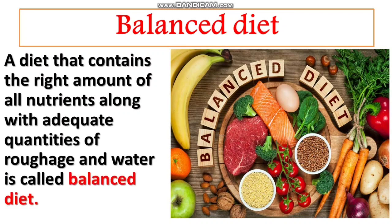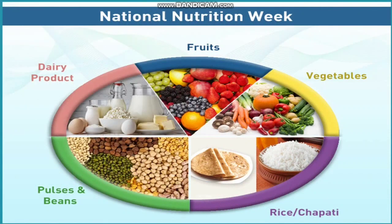A balanced diet should contain all the nutrients which we have studied. Balanced diet means it should contain proper amounts of fruits, vegetables, rice, chapati, pulses, and beans. This is a national nutrition week chart about the balanced diet — what we must eat every week so that we are able to take an adequate amount of food required for our body.